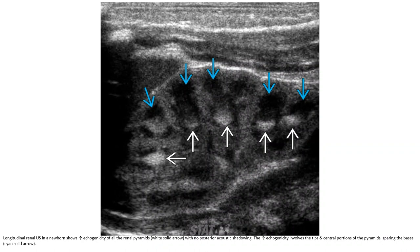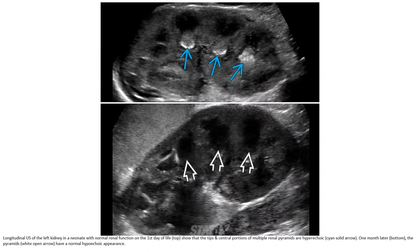The renal ultrasound of a newborn shows increased echogenicity of all the renal pyramids with no posterior acoustic shadowing. The increased echogenicity involves the tip and central portions of the pyramids, sparing the base. In a neonate with normal renal function on the first day of life, the tip and central portions of multiple renal pyramids are hyperechoic. One month later, the pyramids have a normal hypoechoic appearance.